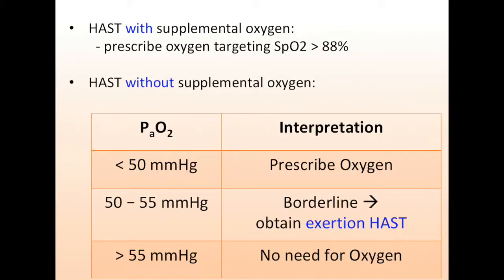If the testing was performed without supplemental oxygen, the need for an oxygen prescription is based off the PaO2. If the PaO2 is greater than 55 mmHg, the test is considered negative and there is no need for supplemental oxygen. If the PaO2 is less than 50 mmHg, the test is considered positive and the patient needs supplemental oxygen prescribed prior to travel. If the PaO2 is between 50 and 55 mmHg, the test is borderline and further high-altitude simulation testing with minimal exertion is warranted.